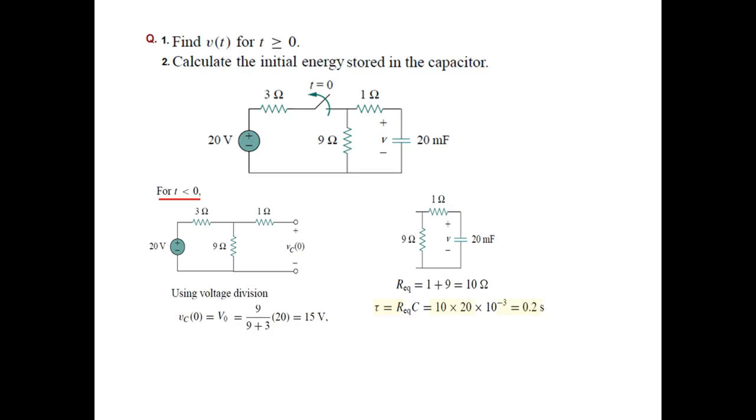So we have found V0, we have found tau. So our voltage equation will become Vc(t) = V0 e raised to the power minus t over tau and this is equal to 15 e raised to the power minus 5t.